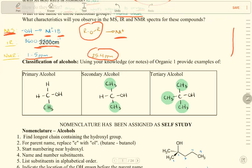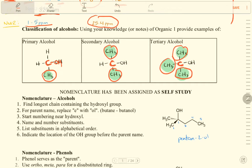Now we need to know primary, secondary, and tertiary alcohols. A primary alcohol has the carbon attached to OH also attached to just one other carbon, such as CH3. A secondary alcohol has that carbon attached to two carbons. A tertiary alcohol has that carbon attached to three carbons.